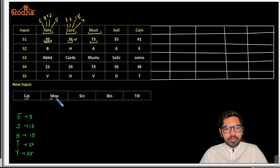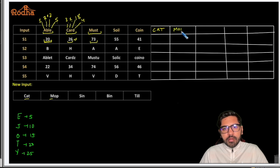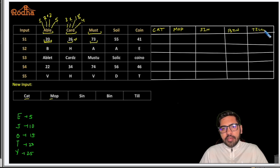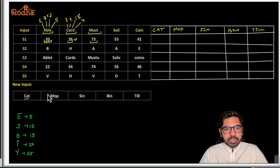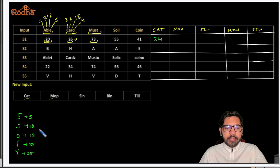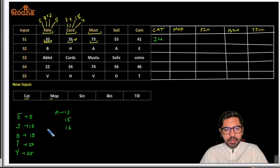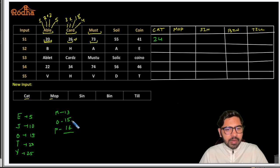For 'cat': C is three, A is one, T is twenty — three plus one plus twenty equals twenty-four. For 'mop': M is thirteen, O is fifteen, P is sixteen — sixteen plus fifteen plus thirteen equals forty-four. For 'sin': S is nineteen, I is nine, N is fourteen — nineteen plus nine plus fourteen equals forty-two.